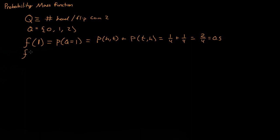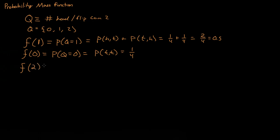Now let's say I want to know the probability of getting zero heads — so no heads. That's equal to the probability of getting tails twice, and that is one-fourth. Finally, let's find the probability of getting heads twice if we flip a coin twice. That's simply the probability of getting heads on both flips, and that is one-fourth.